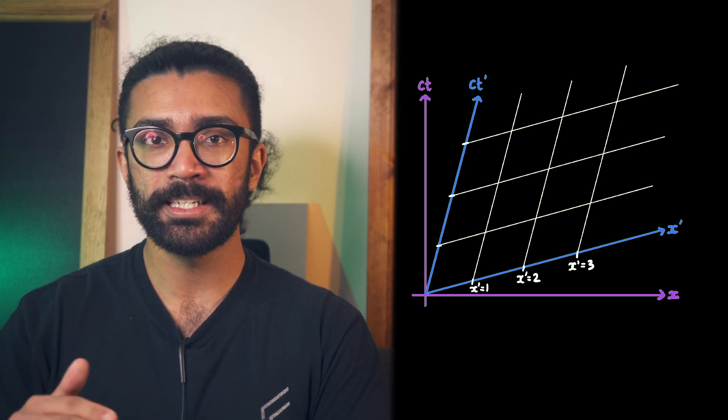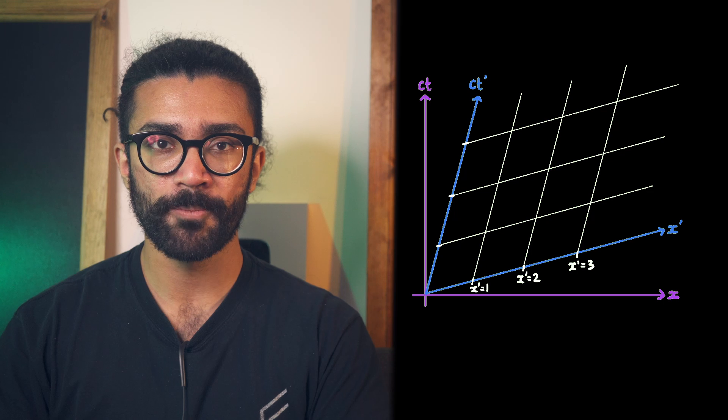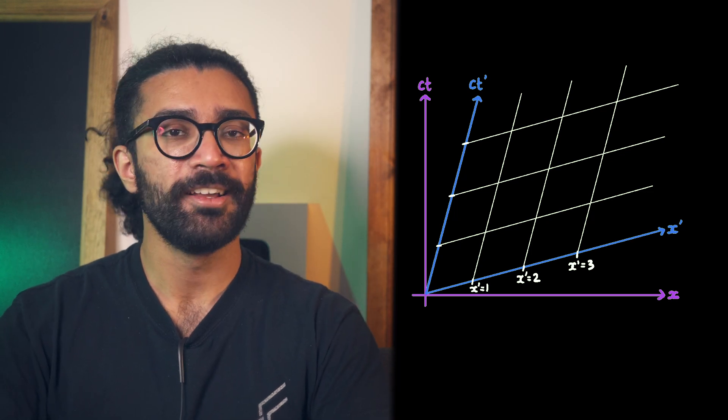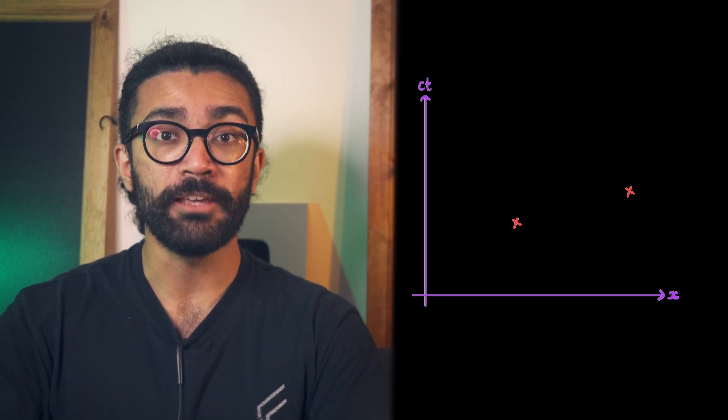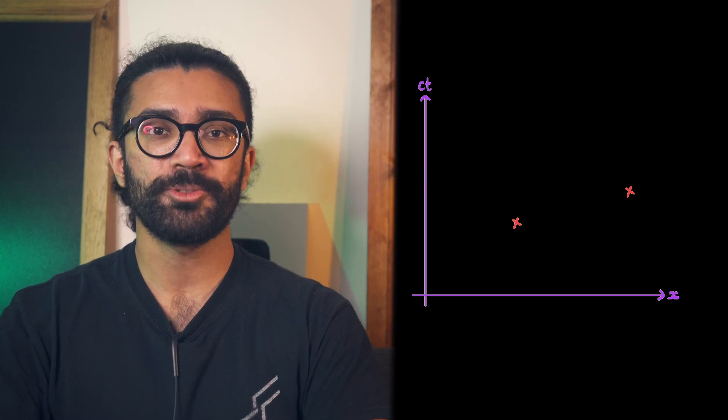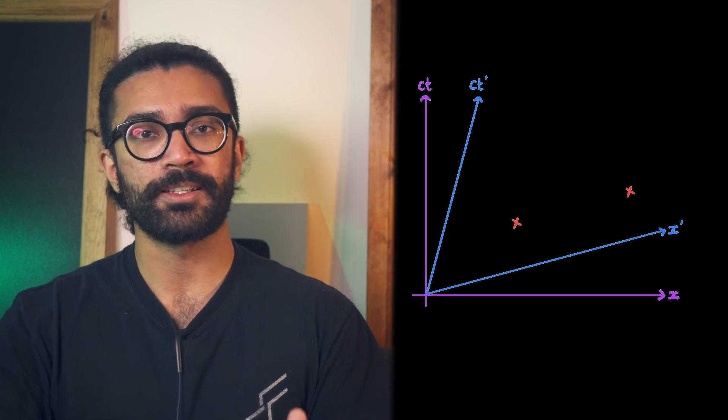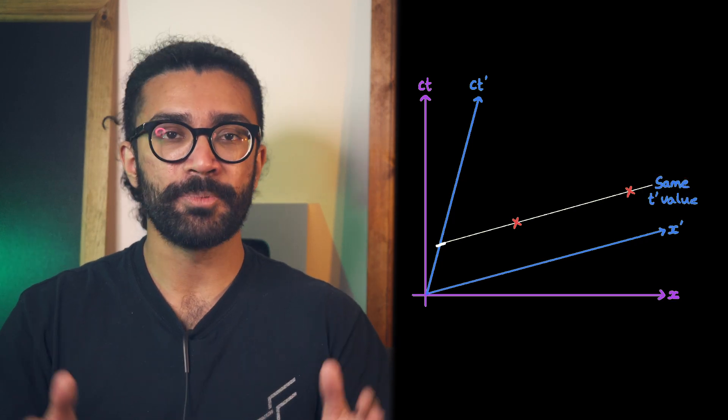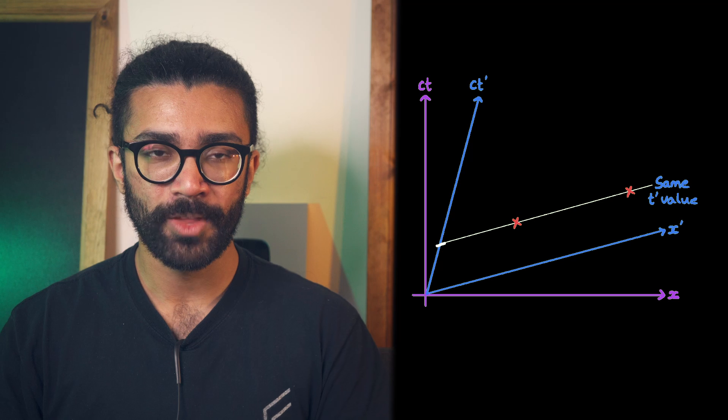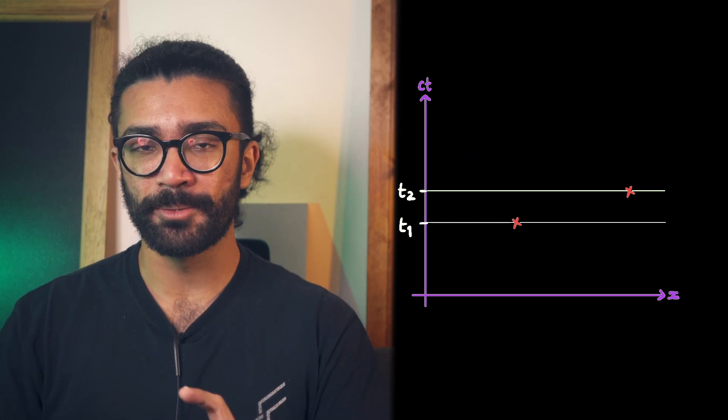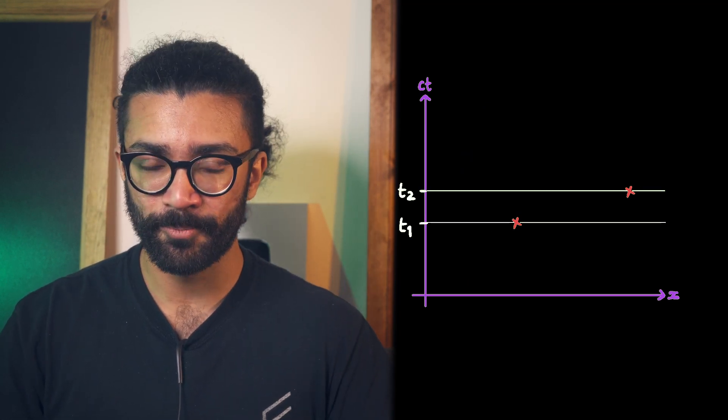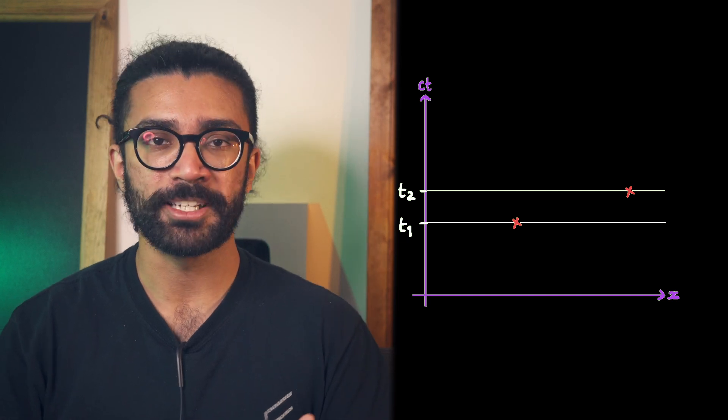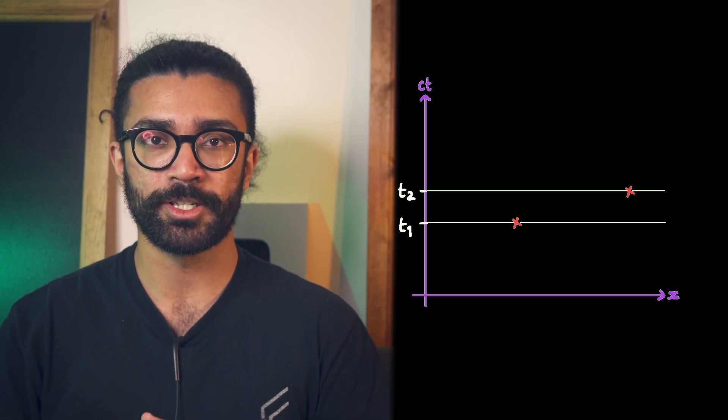It's also worth noting that for this new reference frame, constant position values are found along lines that are parallel to the ct axis and similarly, constant ct values are along the lines parallel to the x axis. So we don't have nice, neat 90 degree angles going on here anymore. But here's a cool thing. In our original reference frame, if we have two events like this, then it is possible to find a reference frame moving at a certain speed where these two events happen at exactly the same time in the new reference frame, even though they happen at different times in our original reference frame.